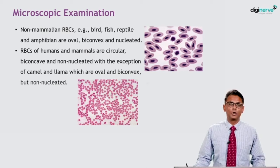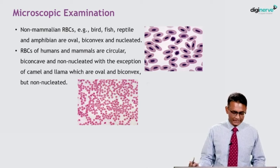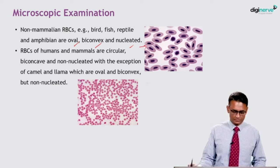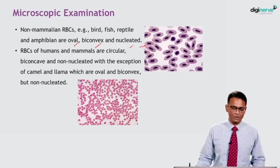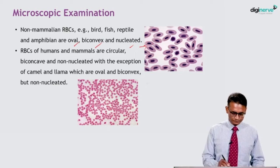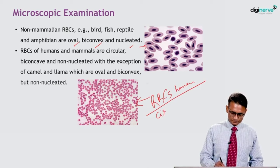In microscopic examination, non-mammalian RBCs — like those in birds, fish, reptiles, and amphibians — are oval, biconvex, and nucleated, as you can see in the image. RBCs of humans and mammals are circular, biconcave, and non-nucleated, with the exception of camel and llama, which are oval, biconvex, and non-nucleated. Human RBCs are shown here — they are circular, biconcave, and non-nucleated; there is no nucleus.